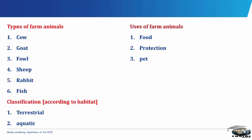Some of the terrestrial animals include cow, goat, fowl, sheep and rabbits. While in the aquatic animals we have those which belong to the Pisces family. We have the shark, the whale, the tilapia fish, the catfish and so on.